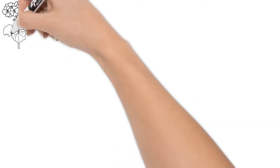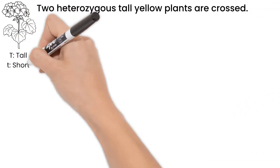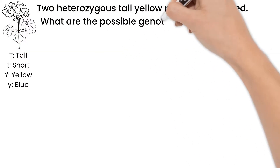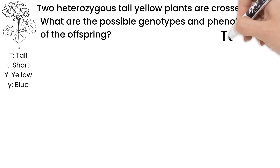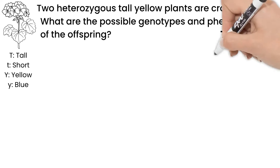We'll cross two heterozygous tall yellow plants. Tall is dominant to short, and yellow is dominant to blue. What are the possible genotypes and phenotypes of the offspring? Both parents are heterozygous for both genes: capital T, lowercase t, capital Y, lowercase y. Remember from our law, those two genes will separate independent of each other. An egg could have the dominant height allele but the recessive color allele. So instead of two possible gametes for each parent, there are four.